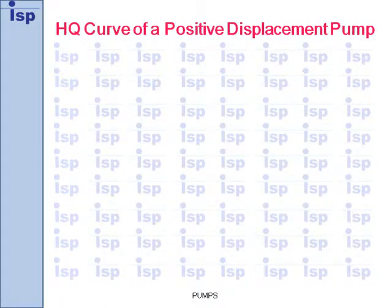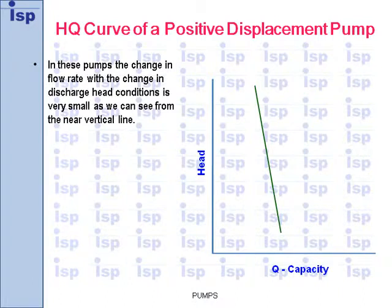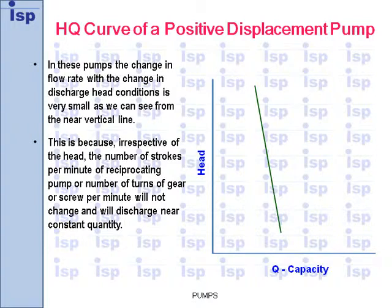HQ curve of a positive displacement pump. In these pumps, the change in flow rate with change in discharge head conditions is very small, as we can see from the near vertical line. This is because, irrespective of the head, the number of strokes per minute of a reciprocating pump or number of turns of a gear or screw per minute will not change, and will discharge a near constant quantity.